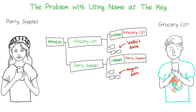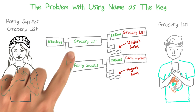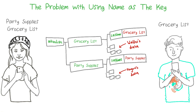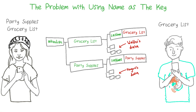Let's say that at some point while using the app, Kugure decides she wants to make a list called grocery list for herself — completely separate from Walter's grocery list that he made for himself. At this point, if we're using names as keys, we'd run into the issue of having two lists with the exact same name, and therefore the exact same URL location. So what would happen? Well, if there aren't any permissions protecting lists from being overwritten, Kugure's list could simply overwrite Walter's.